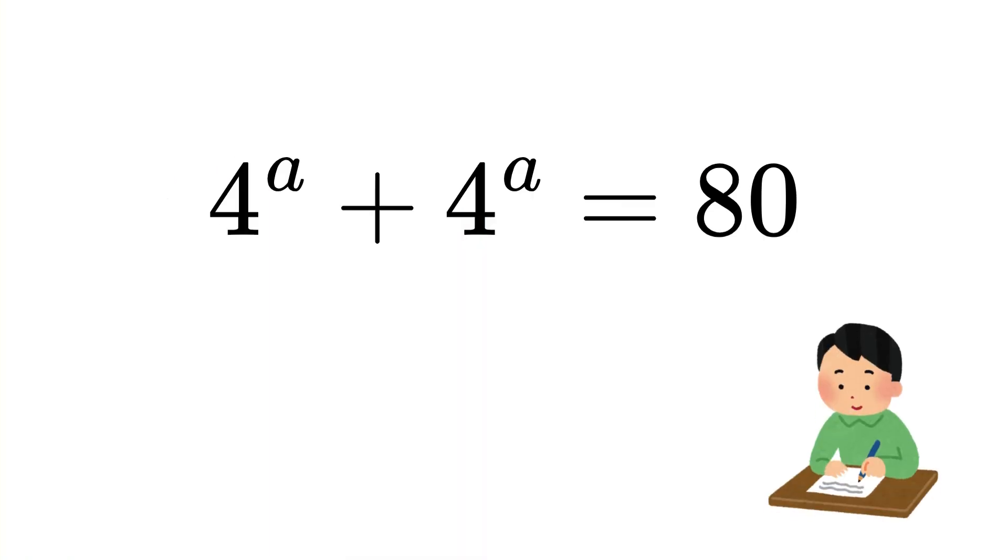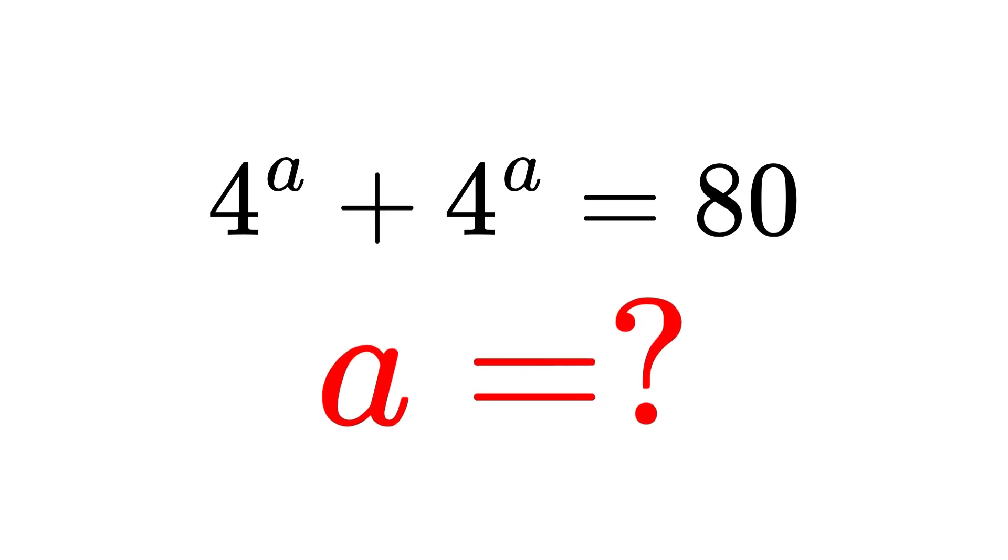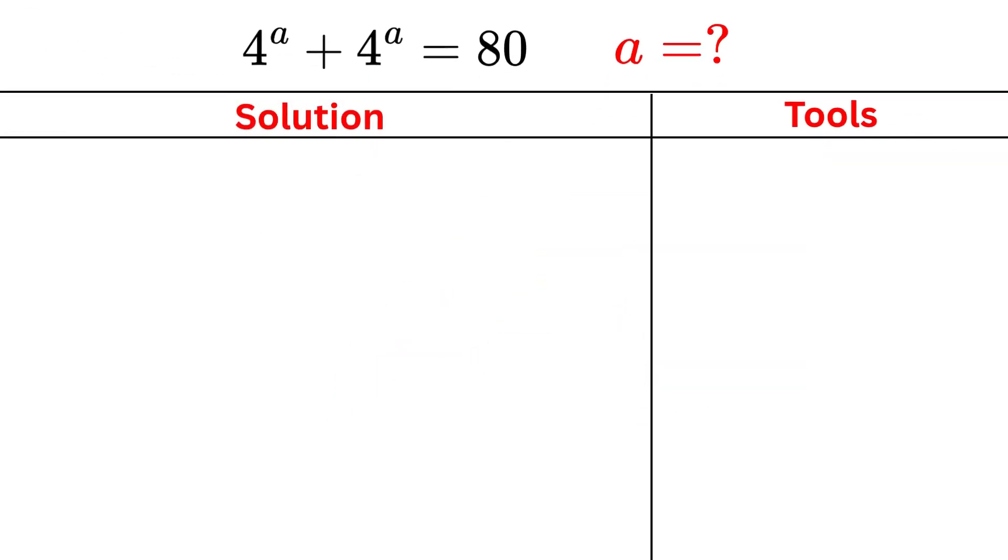Hello and welcome, let's solve this interesting math problem together. The question is: when you add 4 raised to the power of a with itself and the total equals 80, what is the value of a? Let's break it down step by step. We are given that 4^a + 4^a = 80.